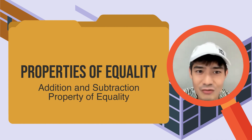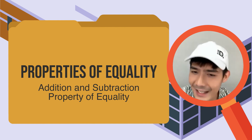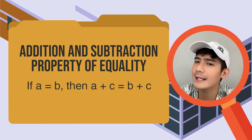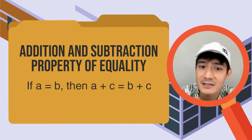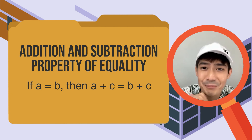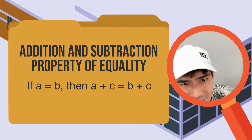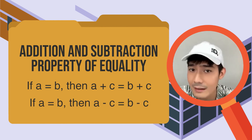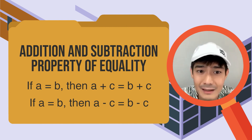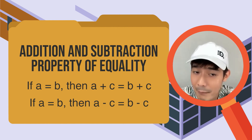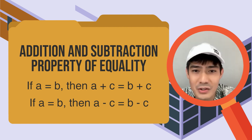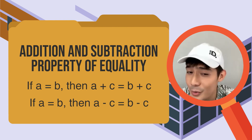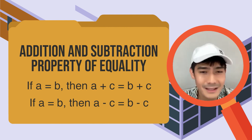Ito ay ang addition and subtraction property of equality. For real numbers a, b, and c, if a is equal to b, then a plus c is equal to b plus c. Ganon din sa subtraction counterpart nito — kung a ay equal sa b, ibig sabihin a minus c ay pareho lamang sa b minus c. Pareho lang ang mga kuha kapag ikaw ay nag-add o nag-subtract ng same value sa magkabilang side ng equation. Kaya naman, when we are solving equations, we really make sure na kung anuman ang value na i-add o isusubtract natin sa isang side, ay gagawin din natin sa kabilang side to maintain the balance of the equation.